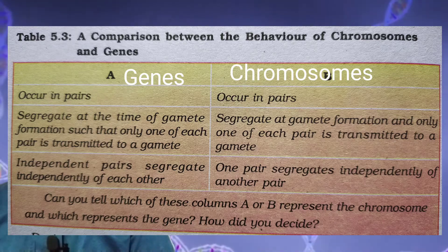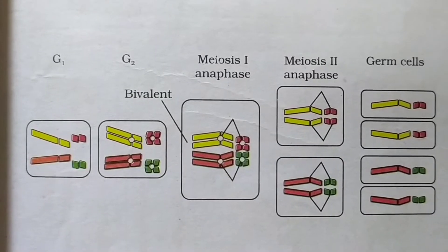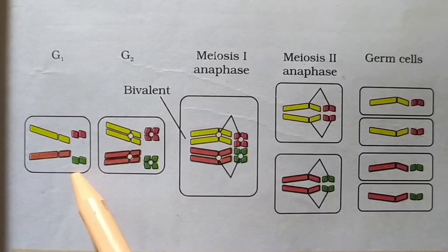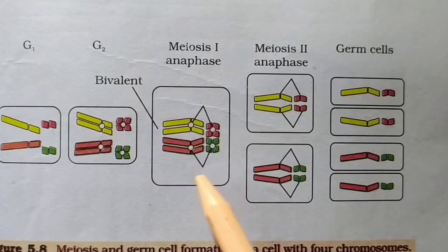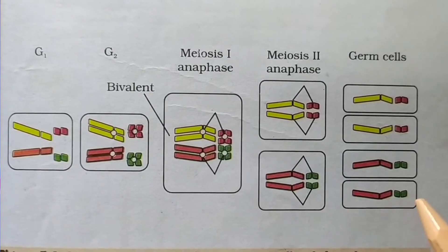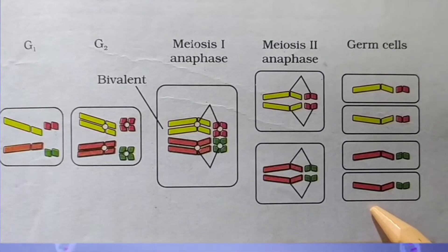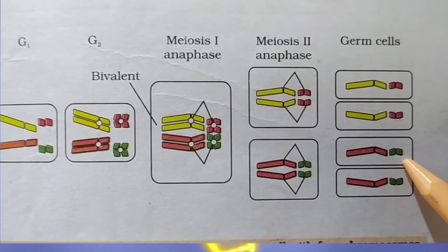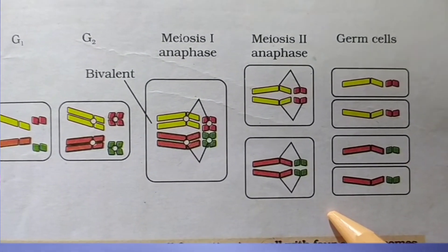These are comparisons between the behavior of chromosomes and genes, where A represents a gene and B represents chromosomes. This diagram represents the chromosomal law of segregation. Two pairs of chromosomes are present: a pair of short chromosomes and a pair of long chromosomes. They are segregated during gamete formation — short and long chromosomes segregate during anaphase I and again in meiosis II anaphase II. Thus each of the four resulting cells gets only one chromosome of each pair.